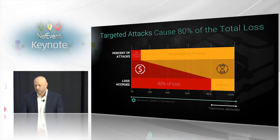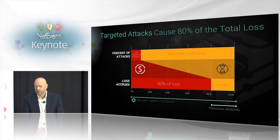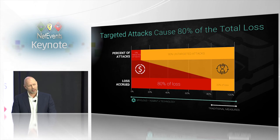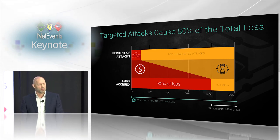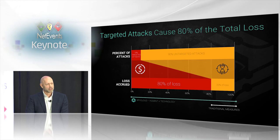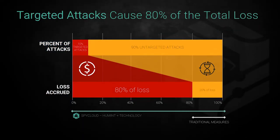MyHeritage, MyFitnessPal, the Under Armour breach — these are fairly recent breaches that were in the press. Probably a lot of people in this room were part of those breaches. There are a lot of other breaches on this slide. We've been measuring when the breach actually occurred, when it leaked to the deep and dark web, and when everybody could gain access to it — when it became a commodity. As you'll see, criminals have a long time with these credentials to do sophisticated, nefarious things with them before it becomes a commodity.